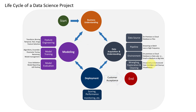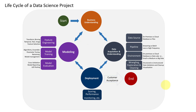Once feature engineering is completed, the next step is feature selection. Not all features help us predict the output. For example, age, gender, and medical conditions are important for predicting diabetes, but the patient's name would not be helpful at all. So we remove features that are not important. This is called feature selection — we only select features that are important for predicting the output, which improves model accuracy.